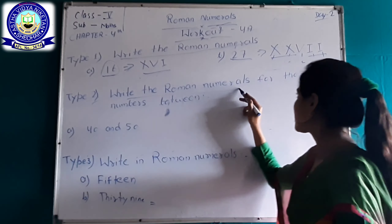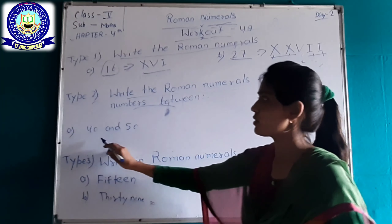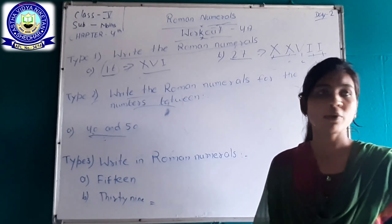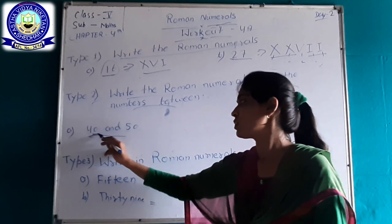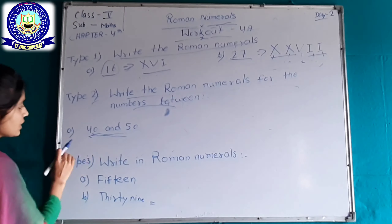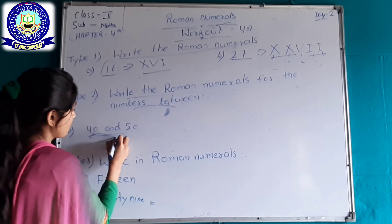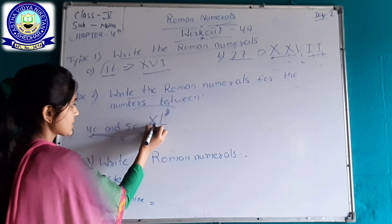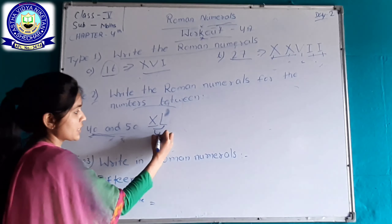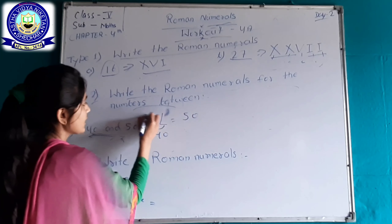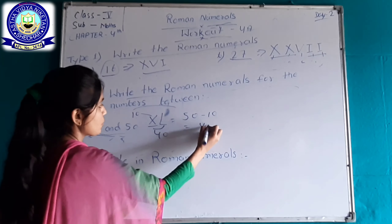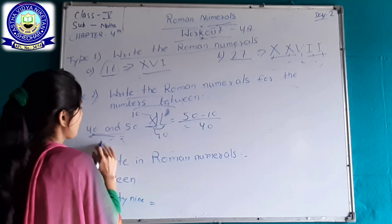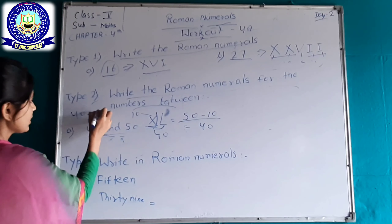The next type of question is: write the Roman numerals for the numbers between 40 and 50. You have to write the counting from 41 to 50. In Roman numerals, L stands for 50. When X appears just before this larger numeral, it becomes 40 — the X is subtracted. So 40 in Roman numerals is XL.